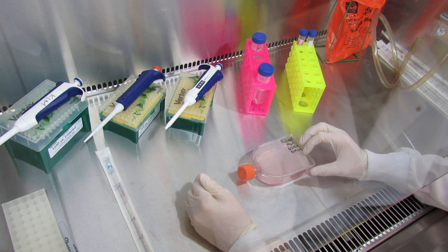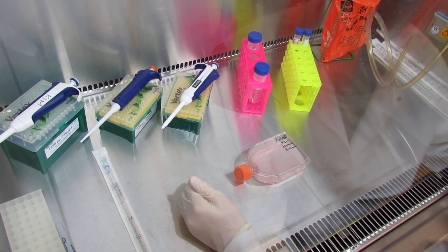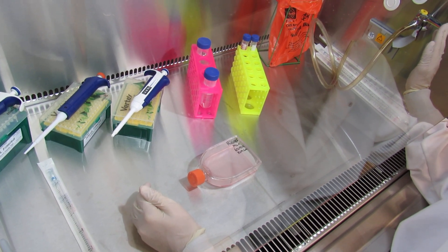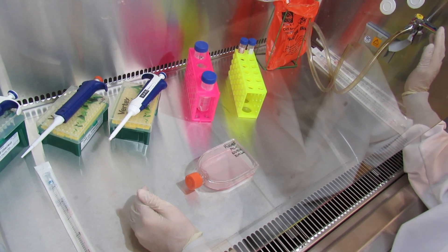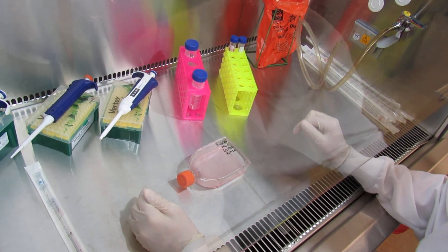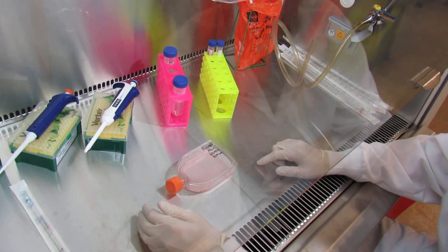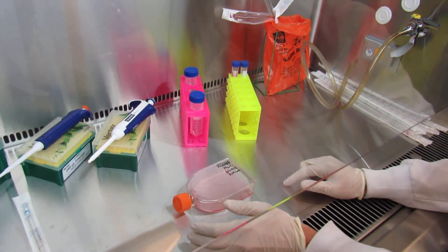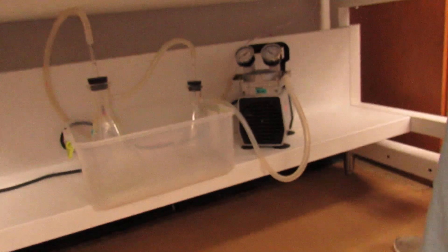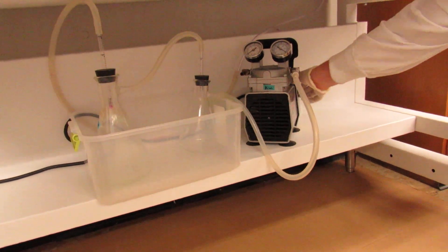To begin, we're going to suck out all of our old media using our vacuum, and then we're going to do two steps of PBS washes. To start, you're going to want to turn on your vacuum, which is located below the biosafety cabinet. As you can see, we'll turn it on by flipping the on switch here.